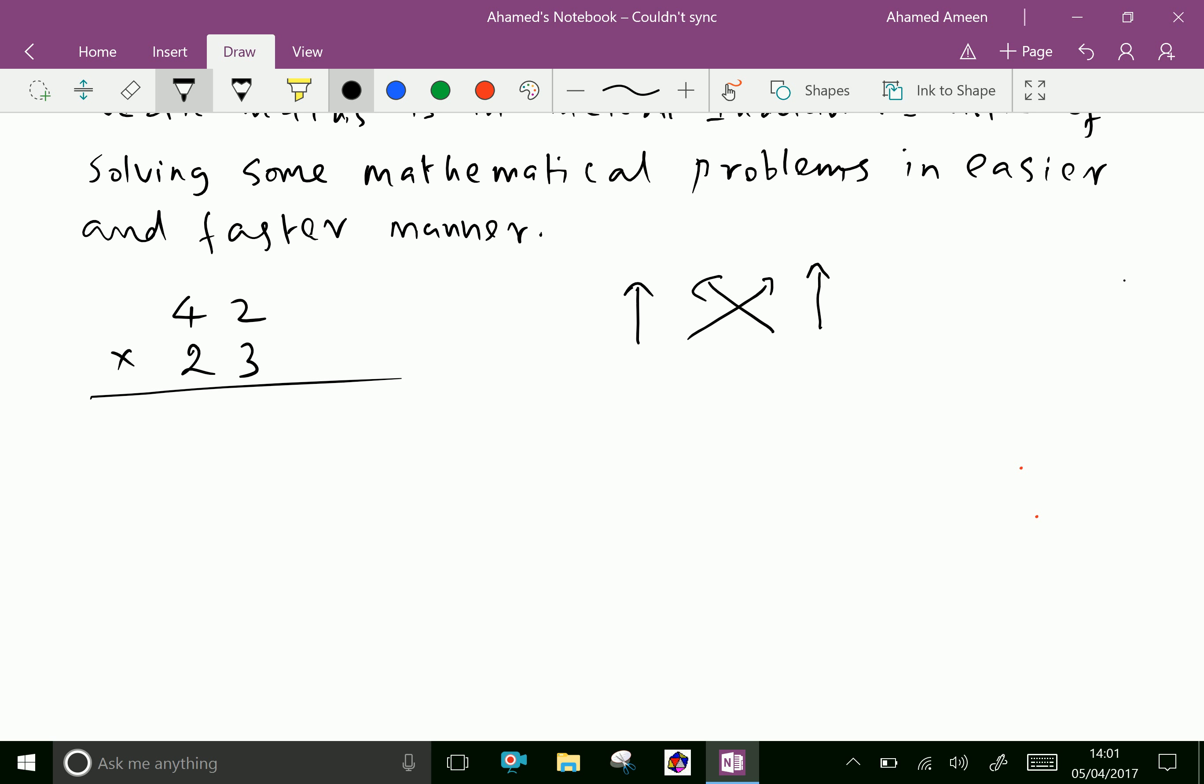First multiply 2 and 3, which is 6. Then multiply the cross numbers: 3 times 4 is 12, and 2 times 2 is 4. Add both: 12 plus 4 is 16, 1 carries. And this arrow: 2 times 4 is 8, 8 plus 1 is 9. So 966 is our answer.